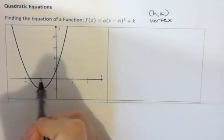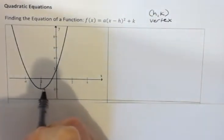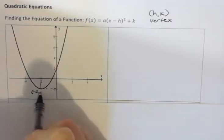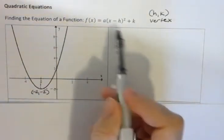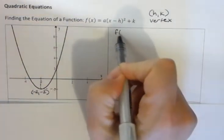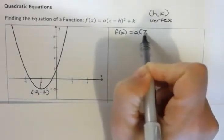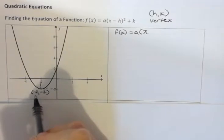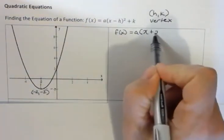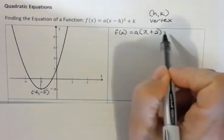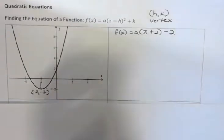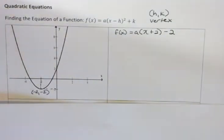So if I know the vertex, which in this case looks like the point negative 2, negative 2, I know a lot about this equation. I have f of x equals a times x minus minus 2, that's going to be plus 2, squared, plus k, which is just going to be minus 2. So I have that much information.